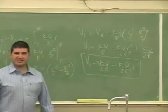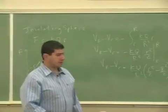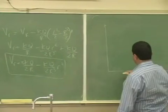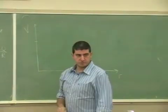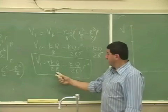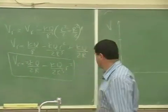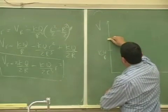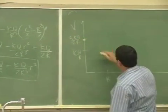We get a weird-looking formula — the potential of an insulating sphere is not as simple as you might think. Let's see how we'd graph it. At r equals zero, the potential is going to be three-halves kq over R, which is the potential at the surface times 1.5. So three-halves kq over R starts up here, and it decreases until you reach R.